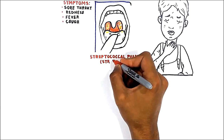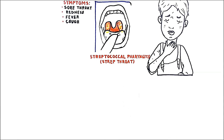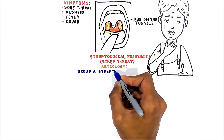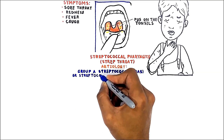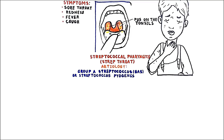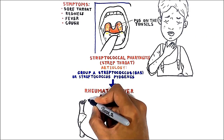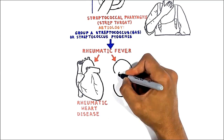Streptococcal pharyngitis, or strep throat, is a common form of pharyngitis in children. In addition to the above-mentioned symptoms, streptococcal pharyngitis is also characterized by pus on the tonsils. A common cause is Group A Streptococcus, or Streptococcus pyogenes. It is important to watch for this bacteria because Group A Streptococcus can lead to rheumatic fever and subsequently rheumatic heart disease and glomerulonephritis.